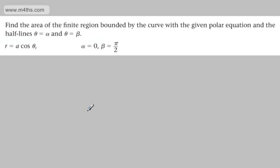In this video, we're going to do our first example of finding the area bounded by a polar curve. We're asked to find the area of the finite region bounded by the curve with a given polar equation and the half lines theta equals alpha and theta equals beta. We've got r equals a cos theta, alpha equals zero, beta equals pi by two.